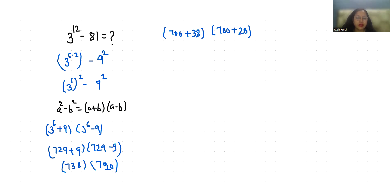38 times 7 is 266 with 2 zeros plus 38 times 2 is 76.